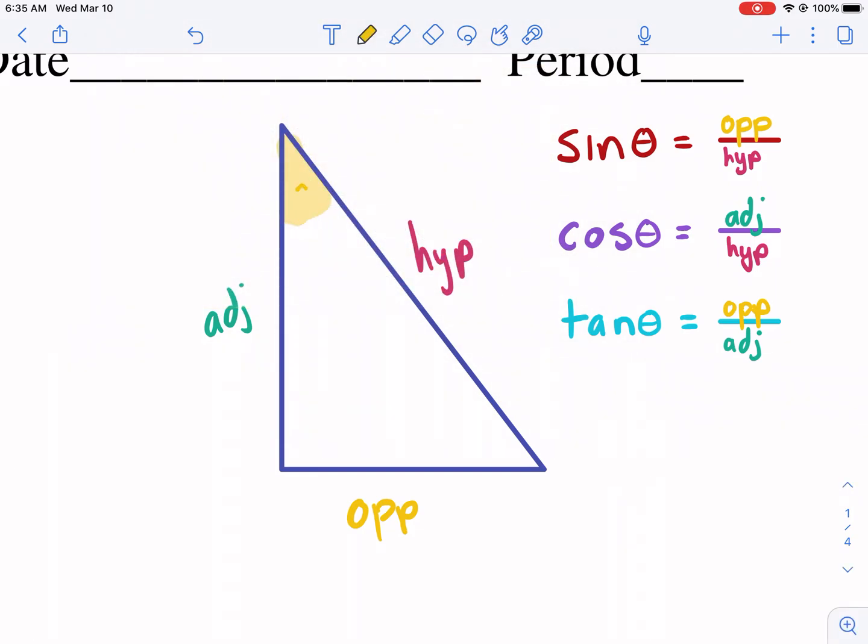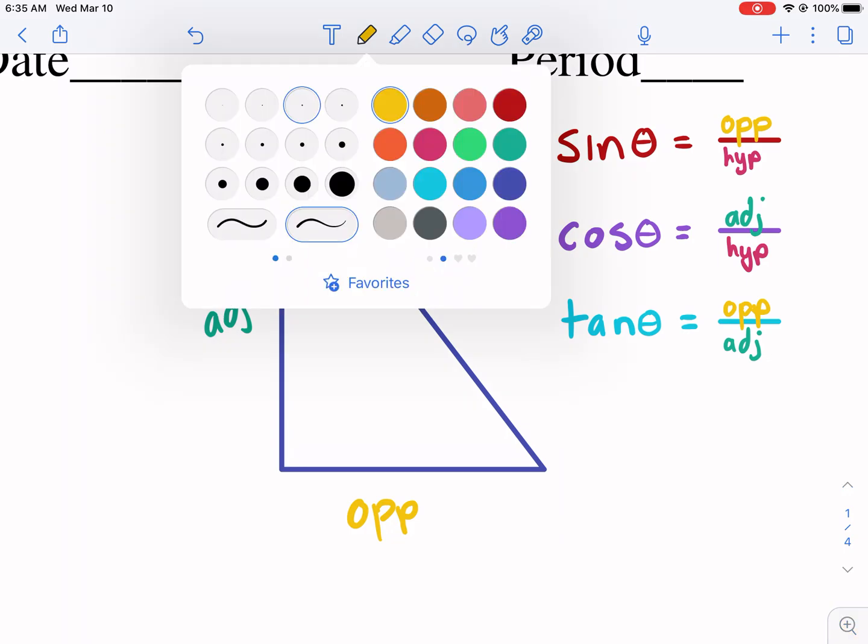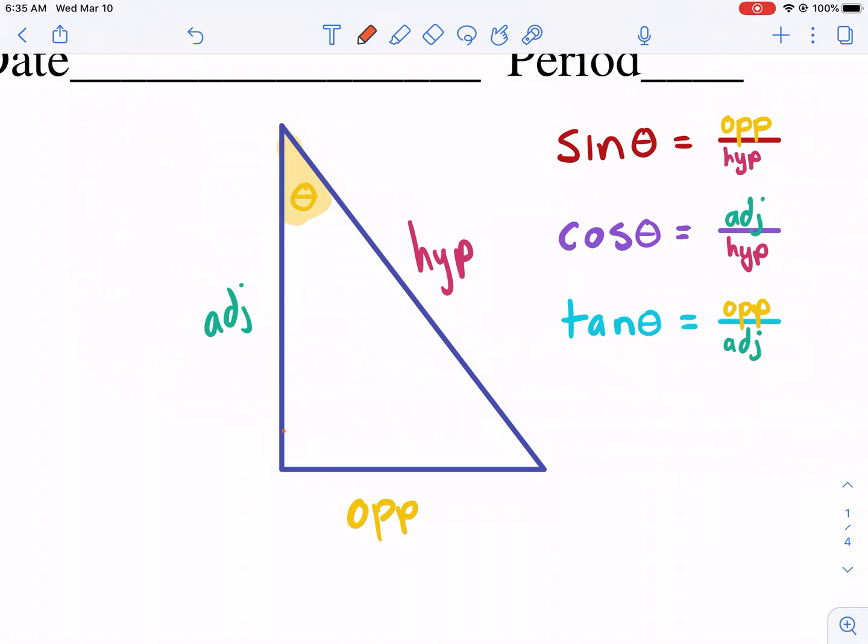Well the first thing you need to know is we always have to have a right triangle. Let me rewind a second here. First off that's theta. That is an angle besides the right angle given in the triangle. So we have a right triangle angle and then we have what I call the reference angle. So that's our reference angle.